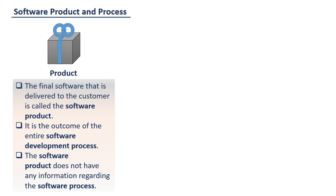The software product does not have any information regarding the software process, like how it was scheduled, how many people worked on it, how the work was divided etc. It only consists of the final application that fulfills the user's requirements.